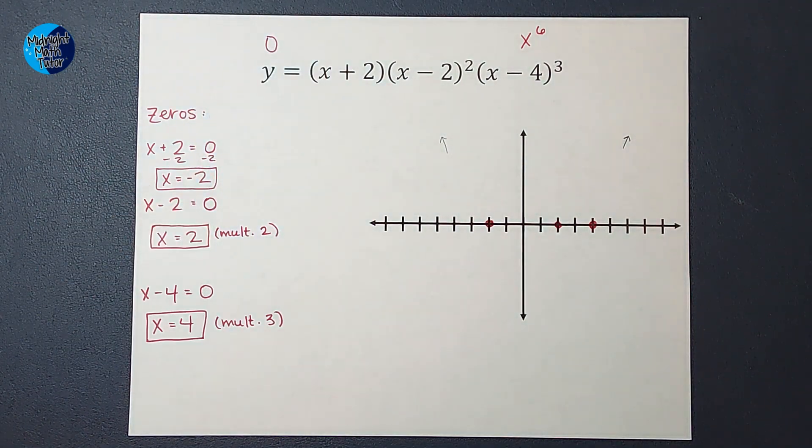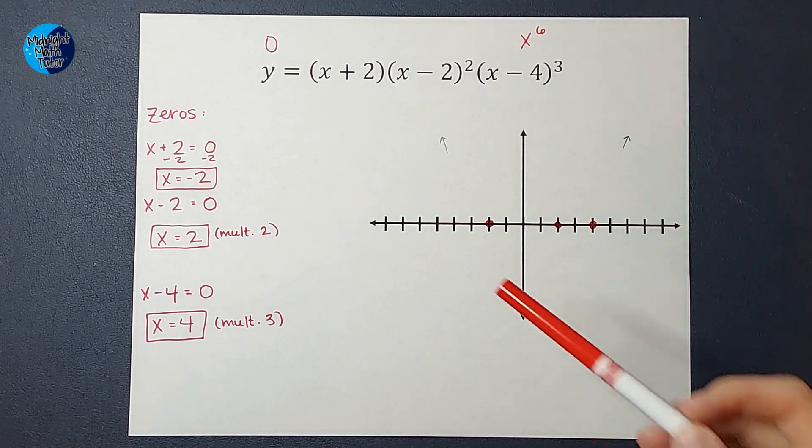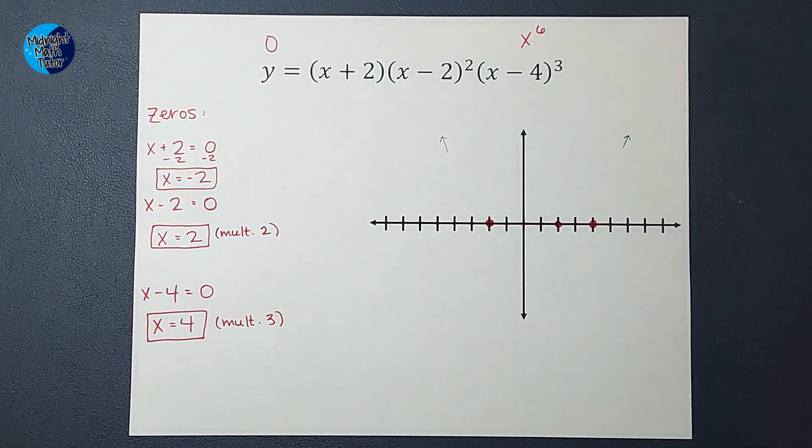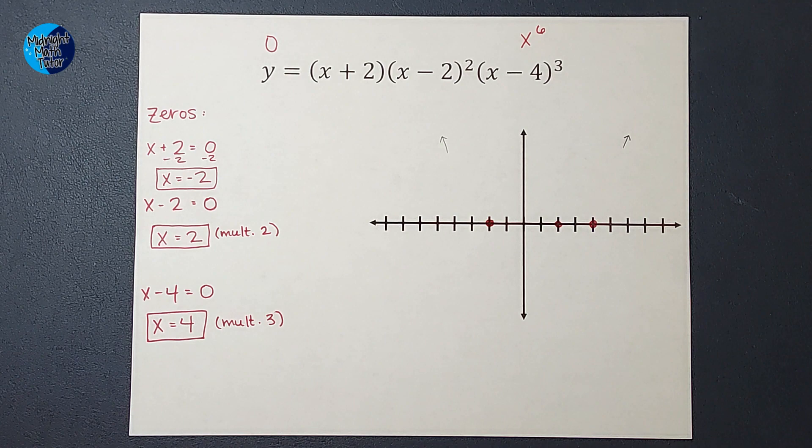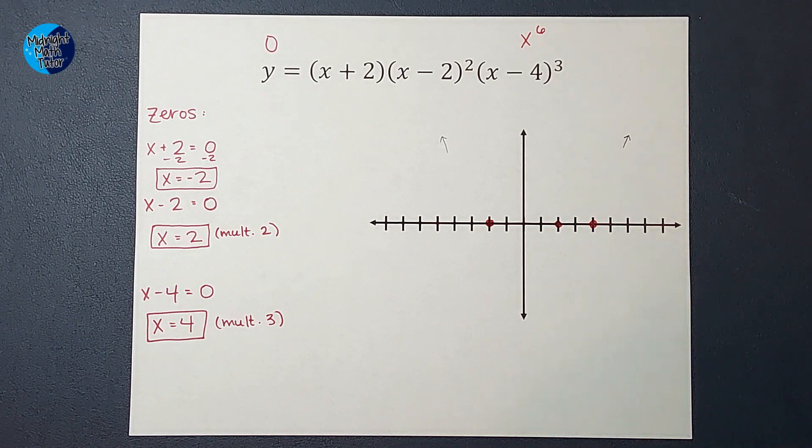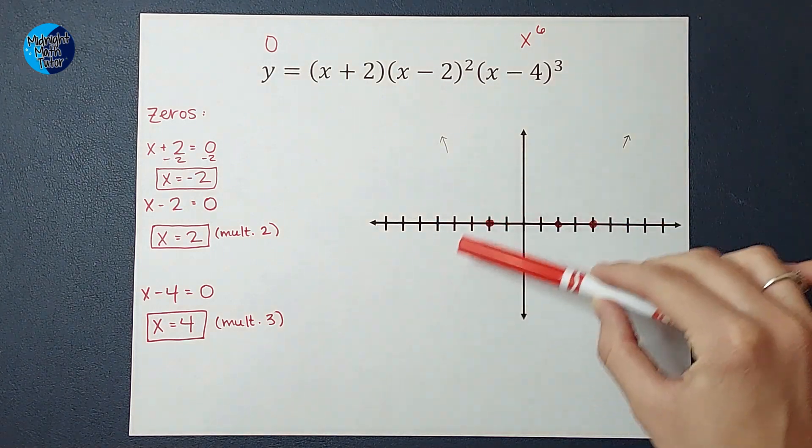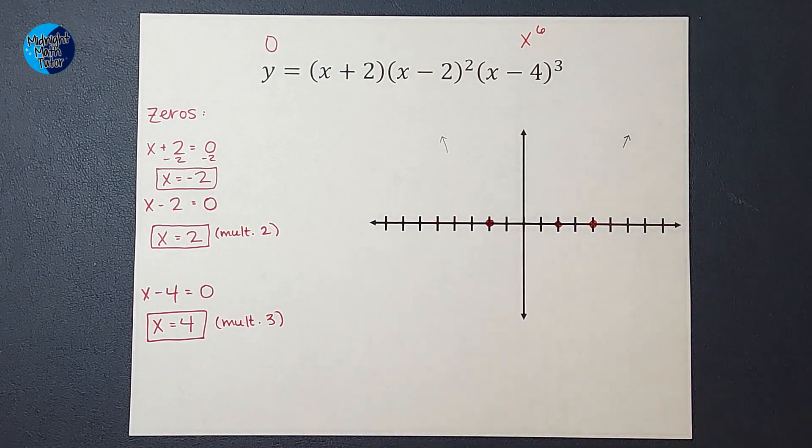But now we're going to look at these multiplicities we talked about. If you have an odd multiplicity, the graph will go right through the point. If you have an even multiplicity, it's going to bounce either up or down, whichever direction it's going.